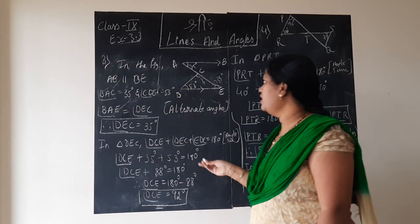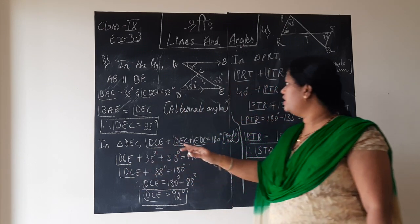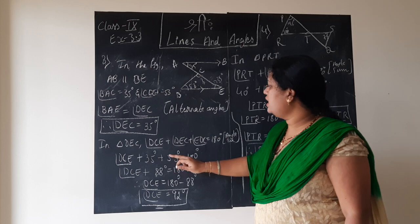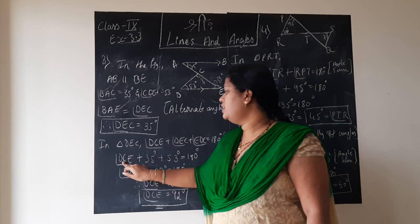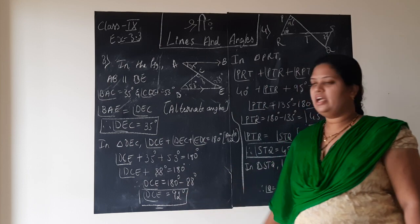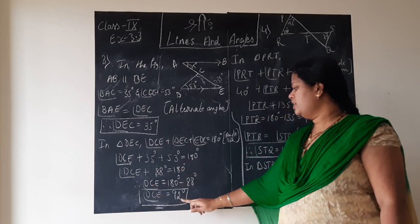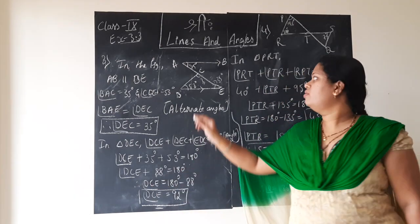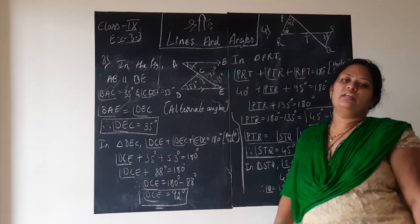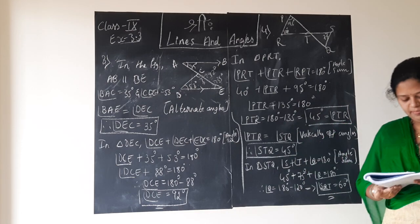By the angle sum property, we know angle D is 53 degrees and angle E is 35 degrees. So 35 plus 53 is 88 degrees, and angle DCE is 180 minus 88, which equals 92 degrees. So angle C is 92 degrees. Very simple problem.